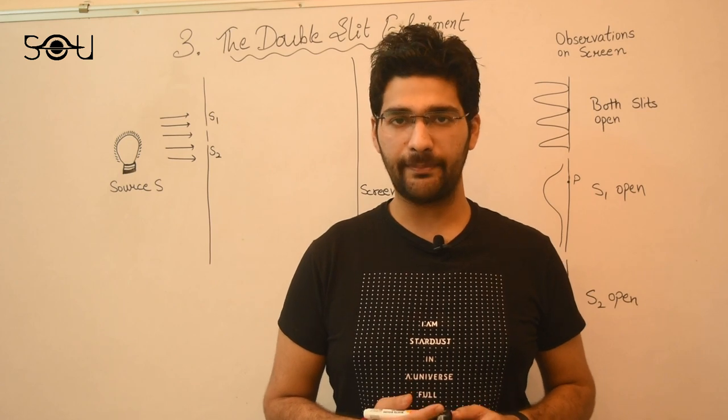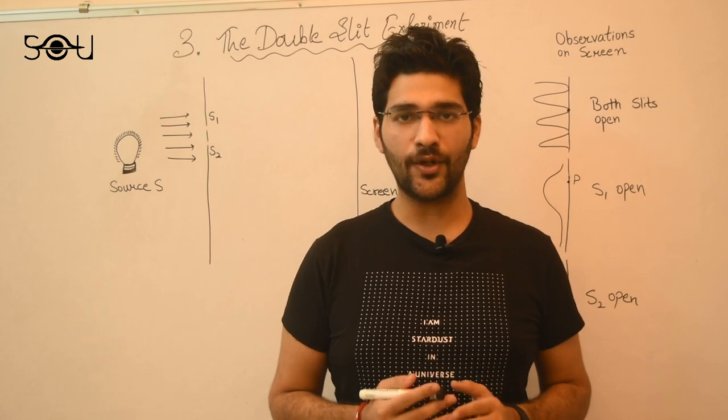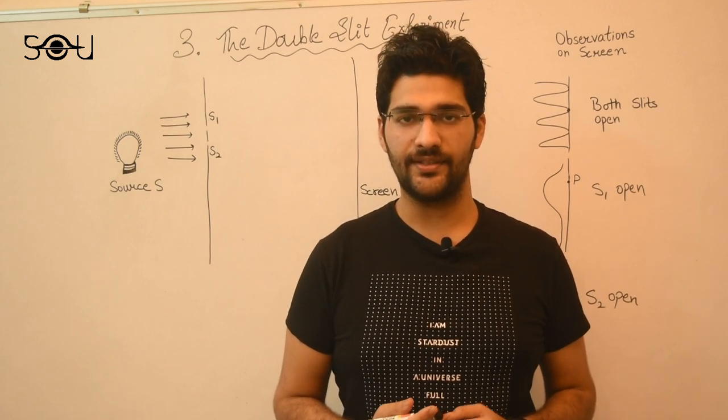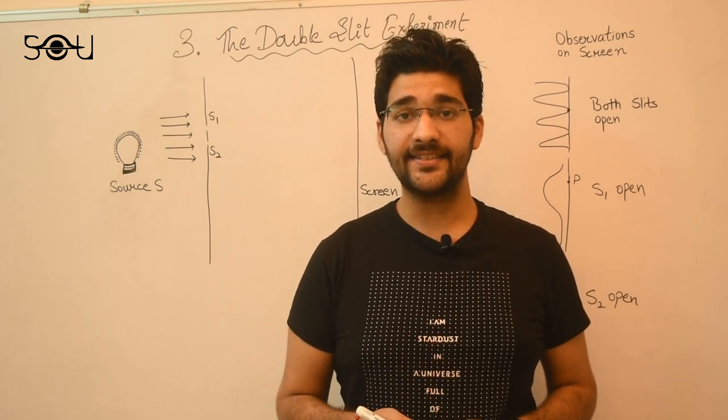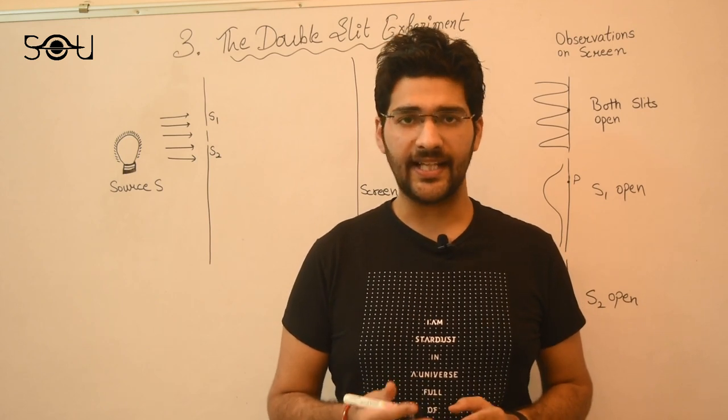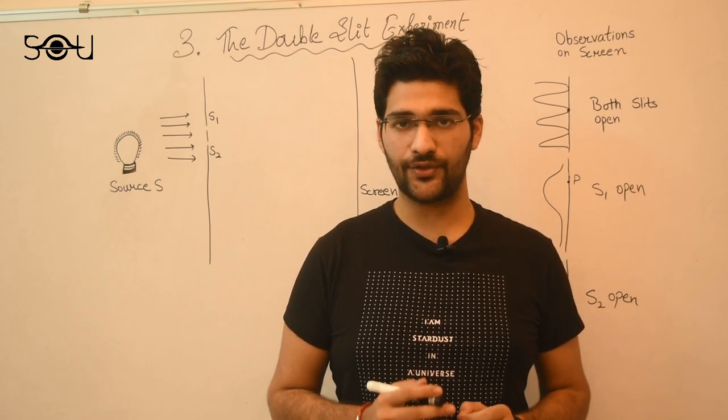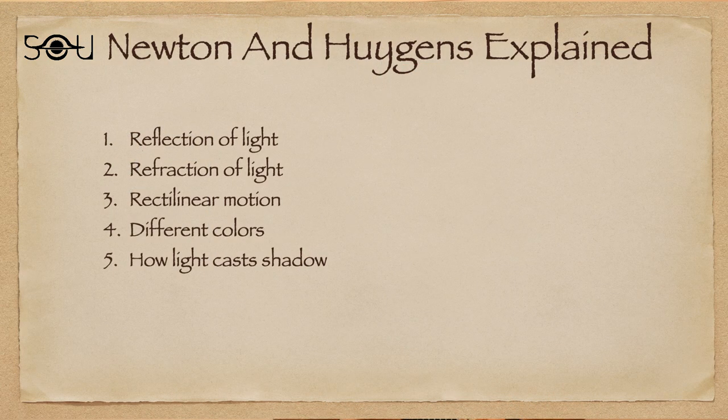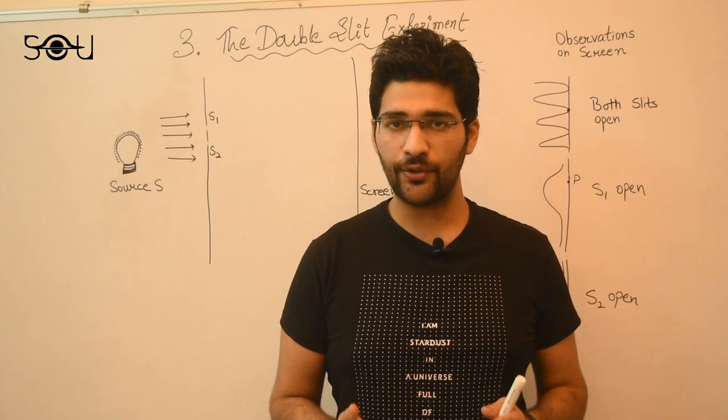In the last video we learned about a debate between Isaac Newton and Christian Huygens on the nature and composition of light. Newton said that light is made up of particles which he called corpuscles. However, Huygens argued that light is not made up of particles but is instead a wave, a disturbance in the medium just like sound waves. We also saw how both were able to explain the known facts and features of light using their own theories: reflection, refraction, rectilinear motion of light, light being made up of different colors, and how light casts shadows.